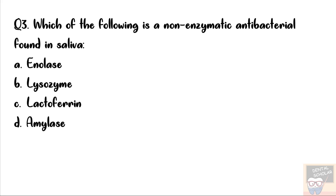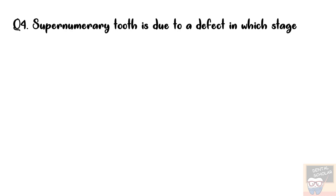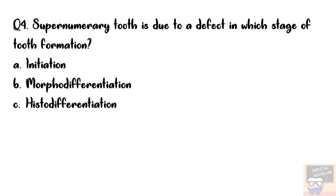Question number 4: Supernumerary tooth is due to a defect in which step of tooth formation? The options are initiation, morphodifferentiation, histodifferentiation, and apposition. The answer is option A, initiation.